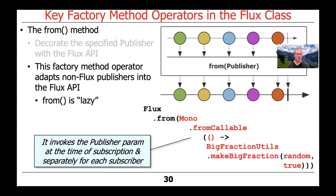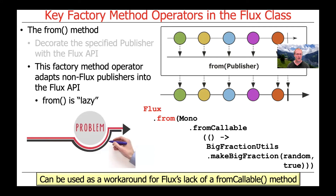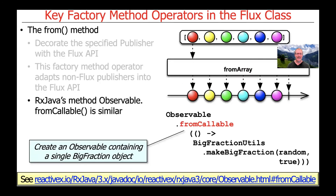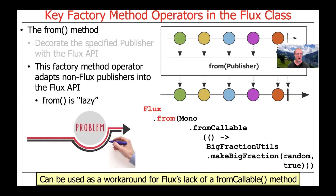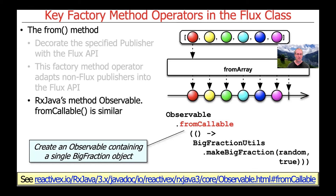That is different from just, fromIterable, and fromArray, which are all eager and will always give back the same result. One reason why this particular idiom is useful is it allows you to work around Flux's lack of a fromCallable method — there is no lazy fromCallable method that's part of the Flux API. In contrast, RxJava's Observable has a lazy fromCallable, so if you're using Observable you can call fromCallable directly. Whereas with Project Reactor, you have to wrap a call to Mono.fromCallable within a Flux.from method, which is a little annoying, but that's the workaround to get the same lazy binding effect.